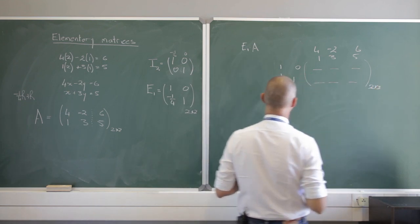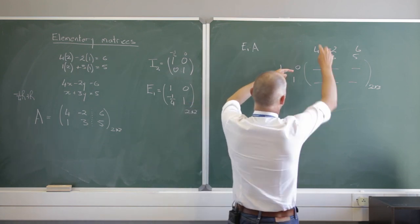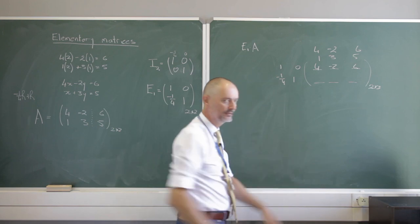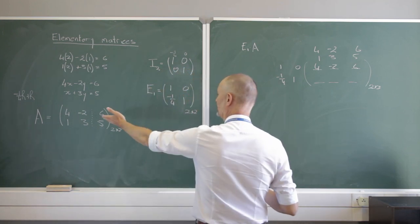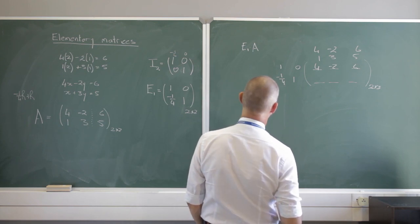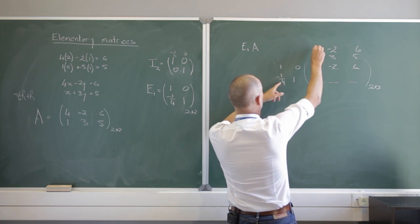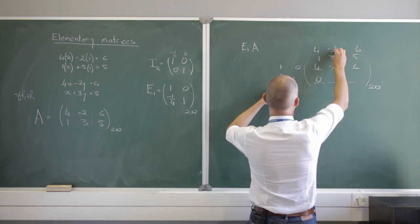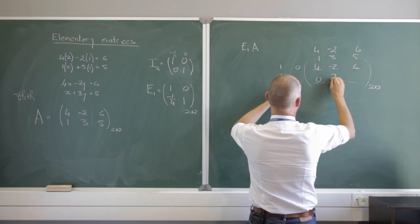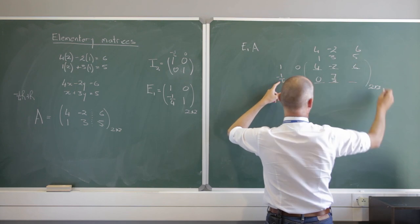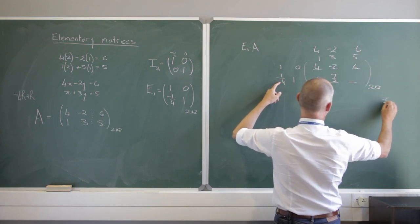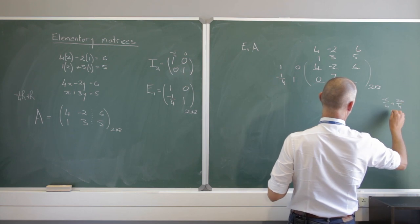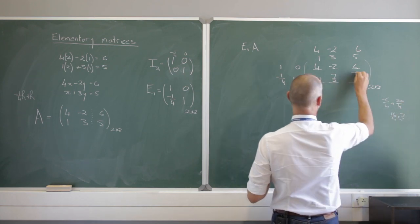Multiplying the first row: 4 plus 0 is 4, minus 2, and 6 — the first row stays exactly where it needs to be. For the second row: minus a quarter times 4 plus 1 gives 0, which is exactly what we want. Minus a quarter times minus 2 is a half, plus 3 gives 3 and a half, which is 7 over 2. And minus a quarter times 6 is minus 6 over 4, plus 5 is 20 over 4, giving 14 over 4, which is also 7 over 2.